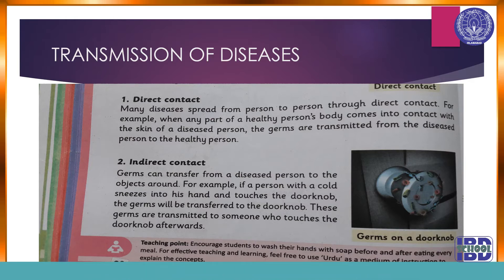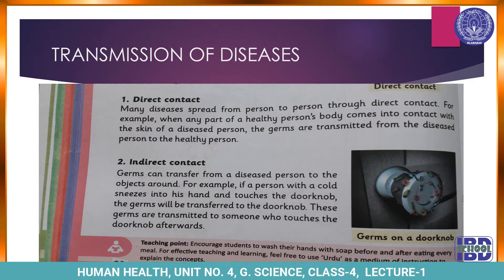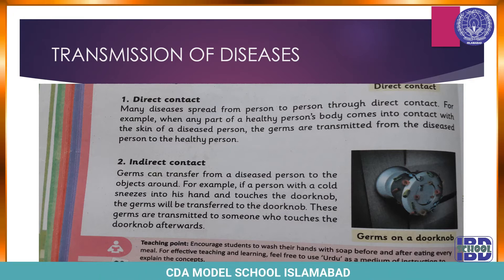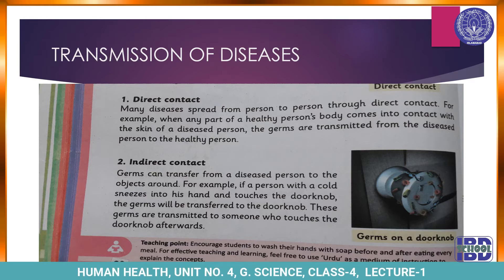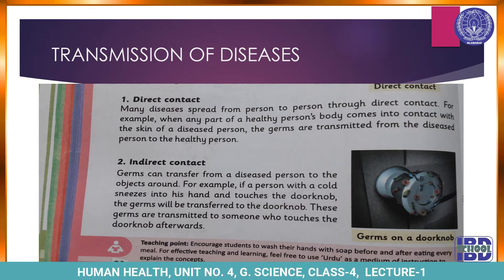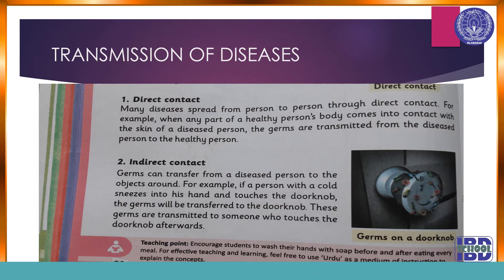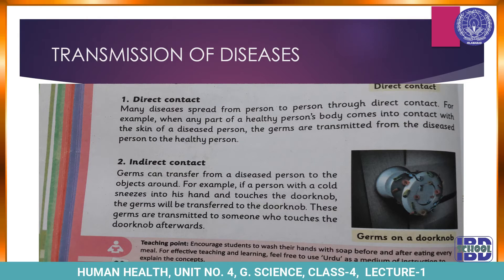The first method is that disease spreads from one person to another person through direct contact. How many diseases spread from person to person through direct contact? When any part of a healthy person's body comes into contact with the skin of a diseased person, the germs are transmitted from the diseased person to the healthy person.